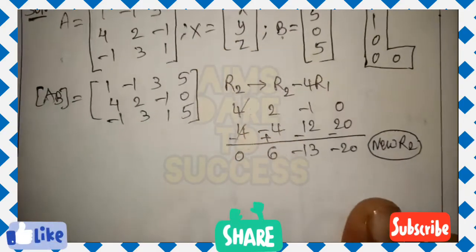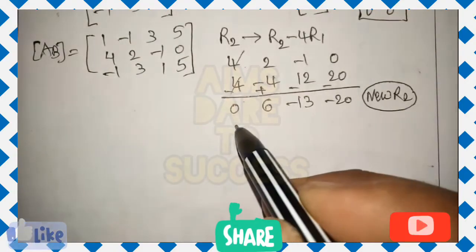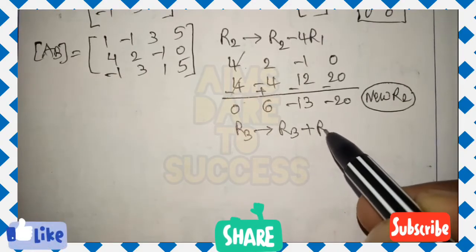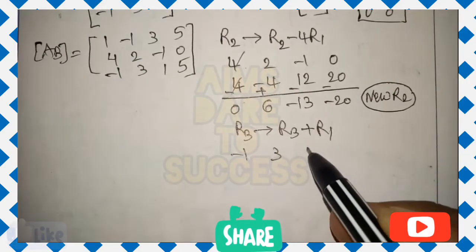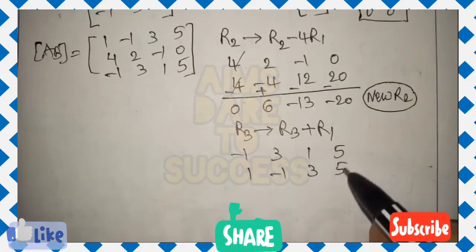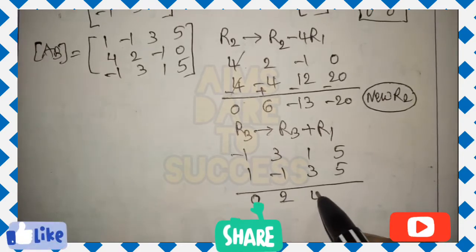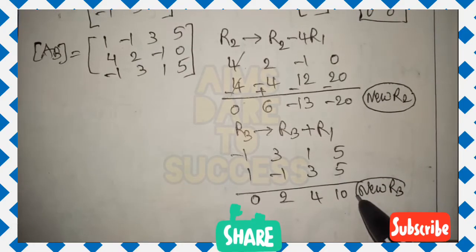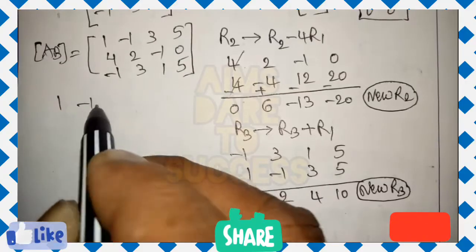Row 3 already has minus 1 as its first element. To get 0, add R1 to R3: R3 = R3 plus R1. R3 values are minus 1, 3, 1, 5 and R1 values are 1, minus 1, 3, 5. Adding: minus 1 plus 1 = 0; 3 plus (minus 1) = 2; 1 plus 3 = 4; 5 plus 5 = 10. New R3: 0, 2, 4, 10.